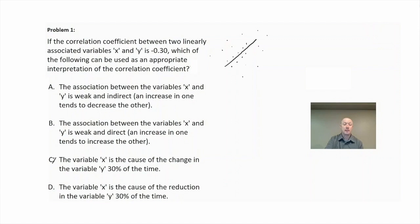So choice C and D talk about the variables x and y causing a change or a reduction 30% of the time. So the correlation coefficient has nothing to do with the change or reduction of the variables. So I'm going to eliminate choices C and D.